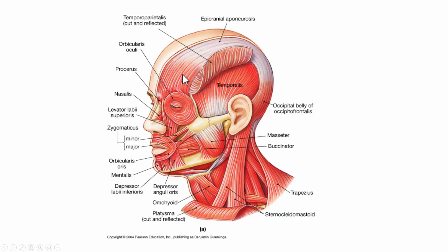This muscle here — if you remember your skull anatomy, what bone is here? Yes, it's the frontal bone, and so this muscle was called the frontalis. If we look at the back of the skull, that bone was the occipital bone, and so this muscle was the occipitalis. And then we have a wide tendon — remember, the name for a wide tendon is an aponeurosis — and so the old name for this was the galea aponeurotica.